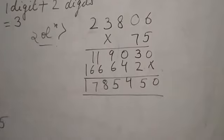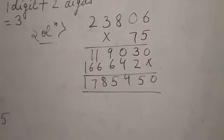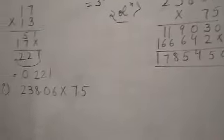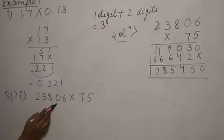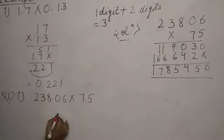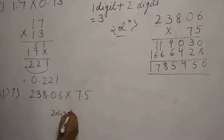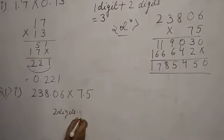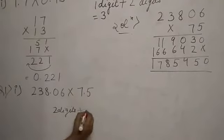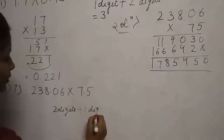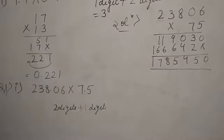Now again the question is: where will you place the decimal? After the decimal in 238.06 there are two digits. After the decimal in 7.5 there is one digit. Total digits: three.